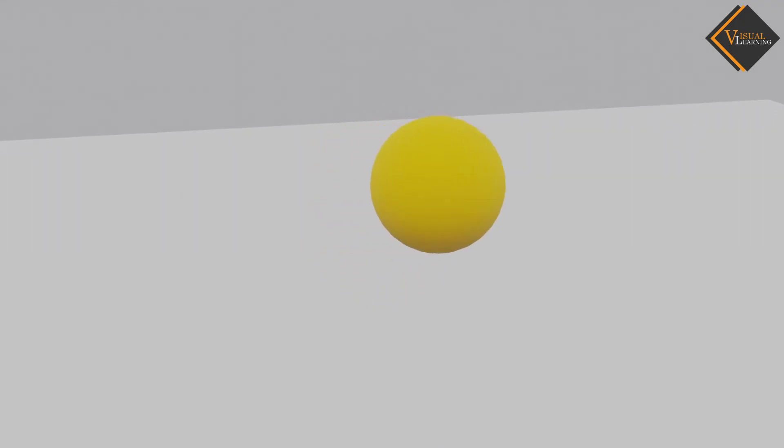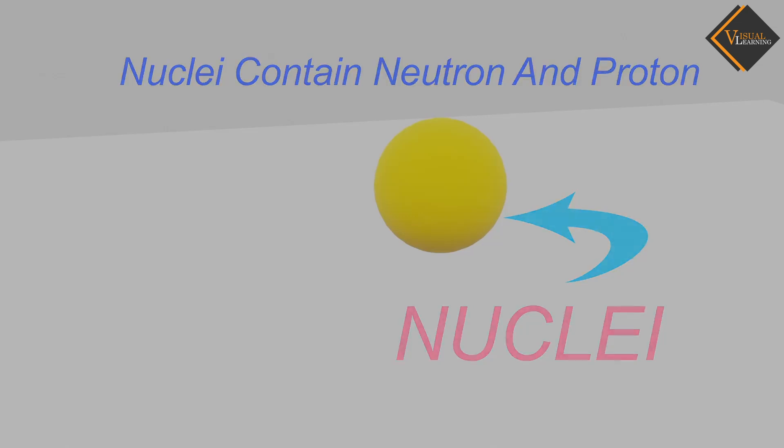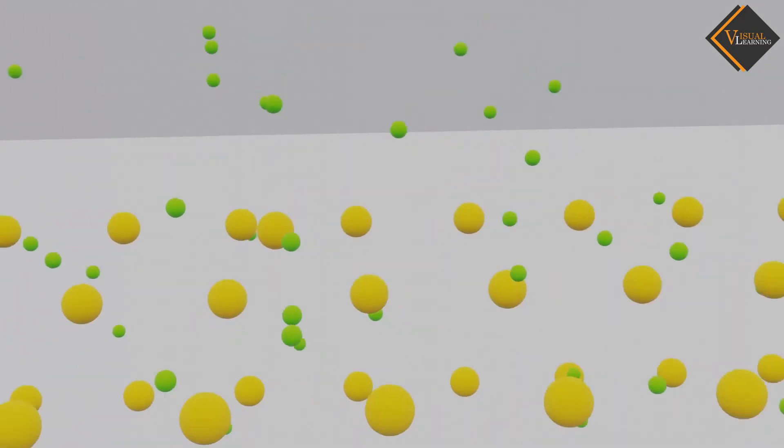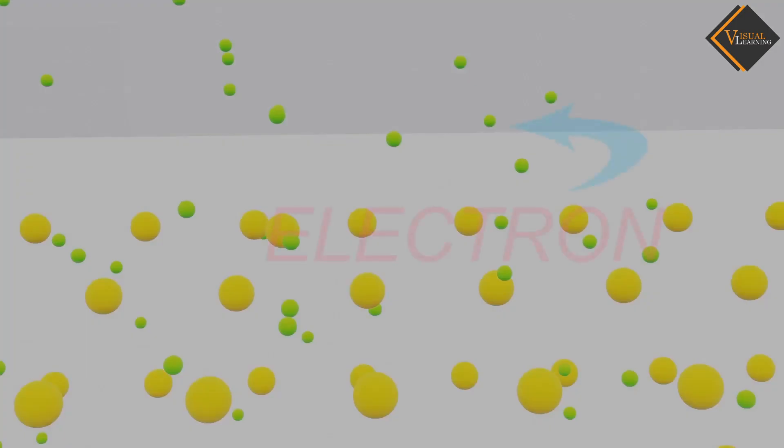Protons and neutrons exist in the nucleus and are bound by the atom's binding energy. In the case of metals, the outer shell electrons are free.